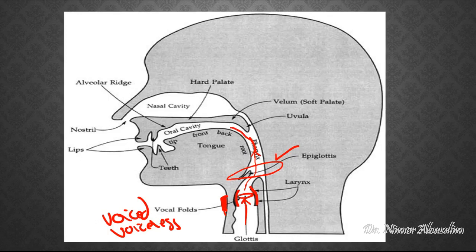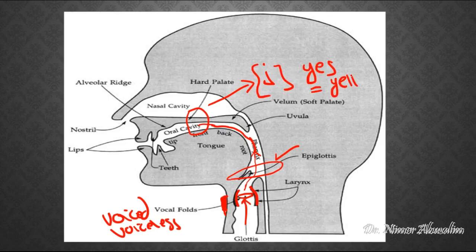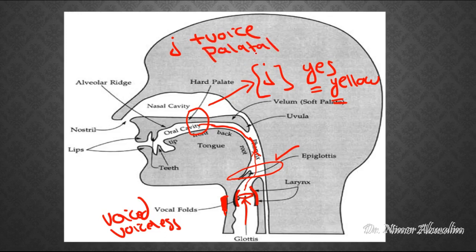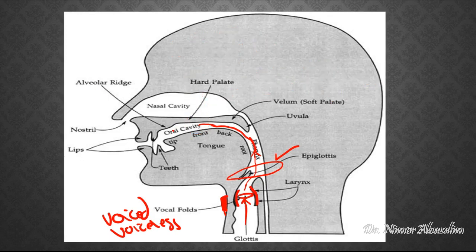Continuing with our airflow, there are sounds that can be modified in the palatal region, or the hard palate. In English, there is only one such sound, and that is the Y sound, as in 'yes' or 'yellow.' The sound is voiced. So we can describe the Y sound as being plus voice and palatal, meaning it is articulated at the hard palate. Notice that the area right behind that is called the alveolar ridge.